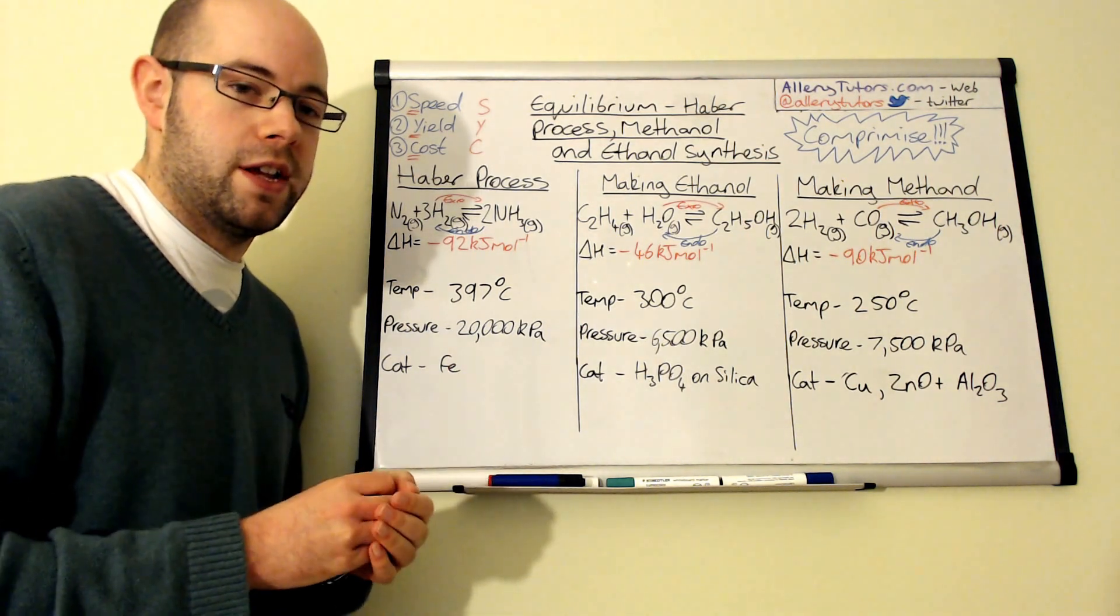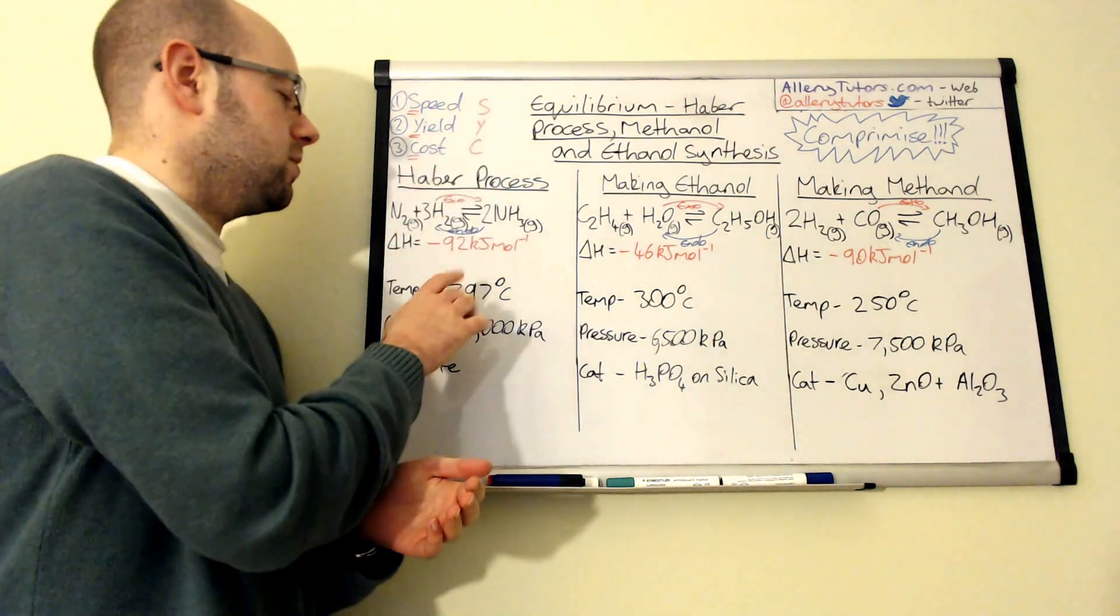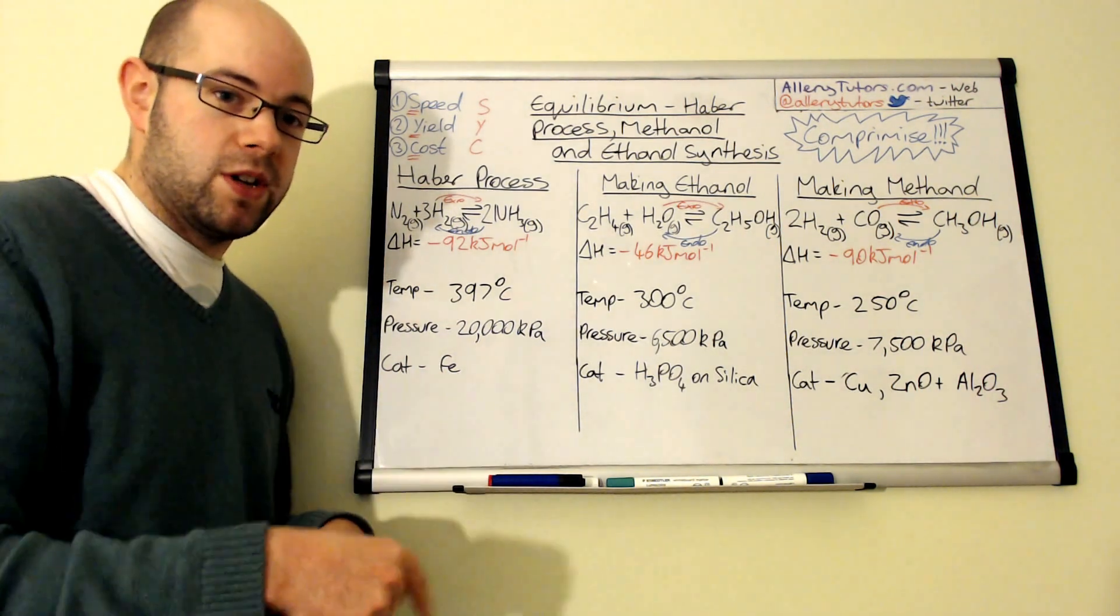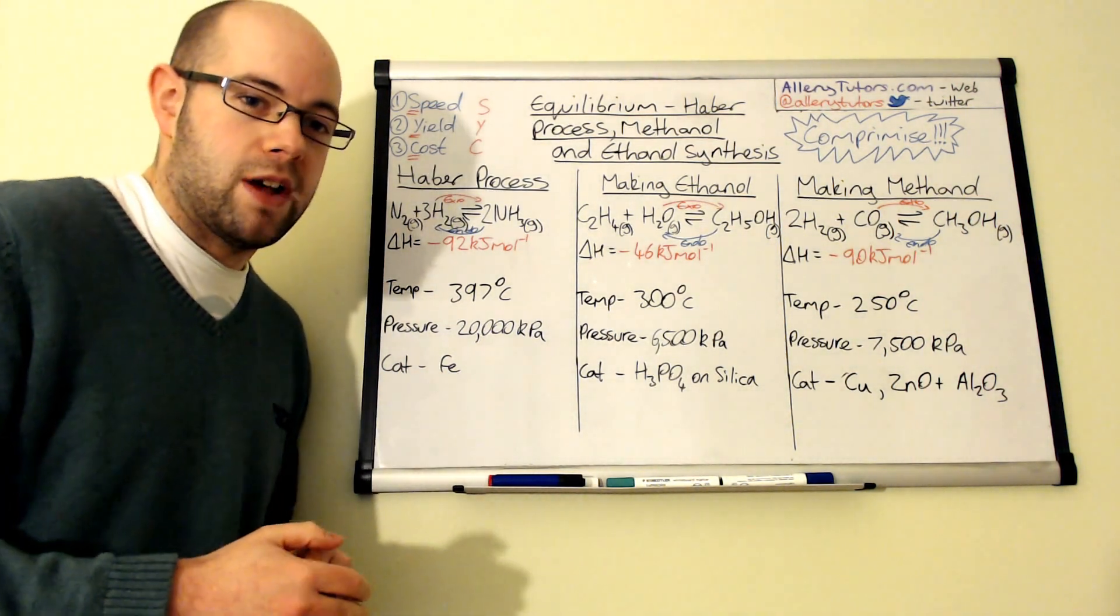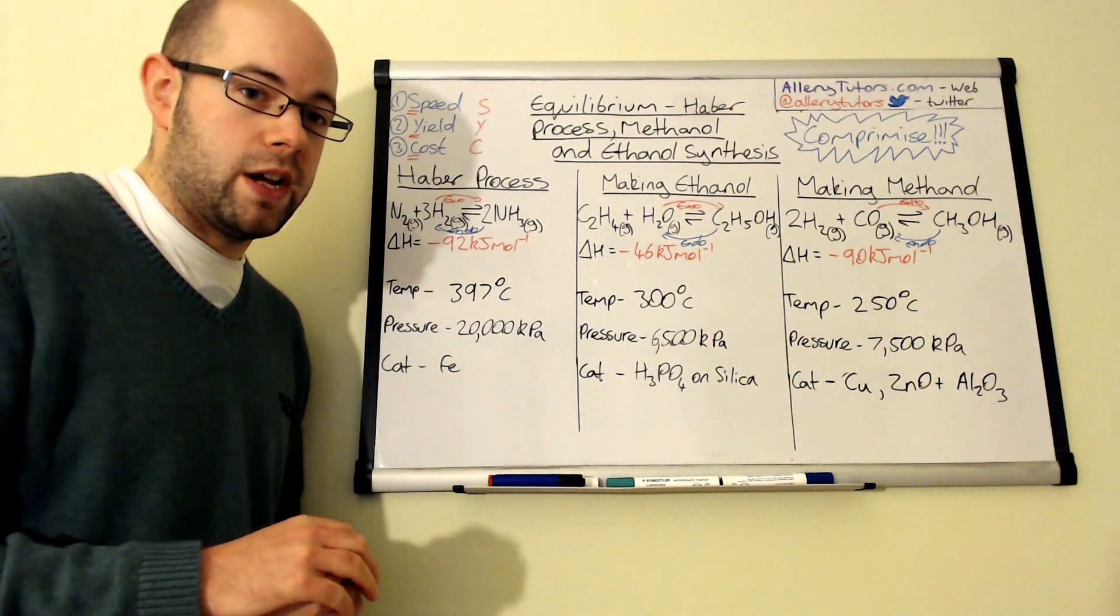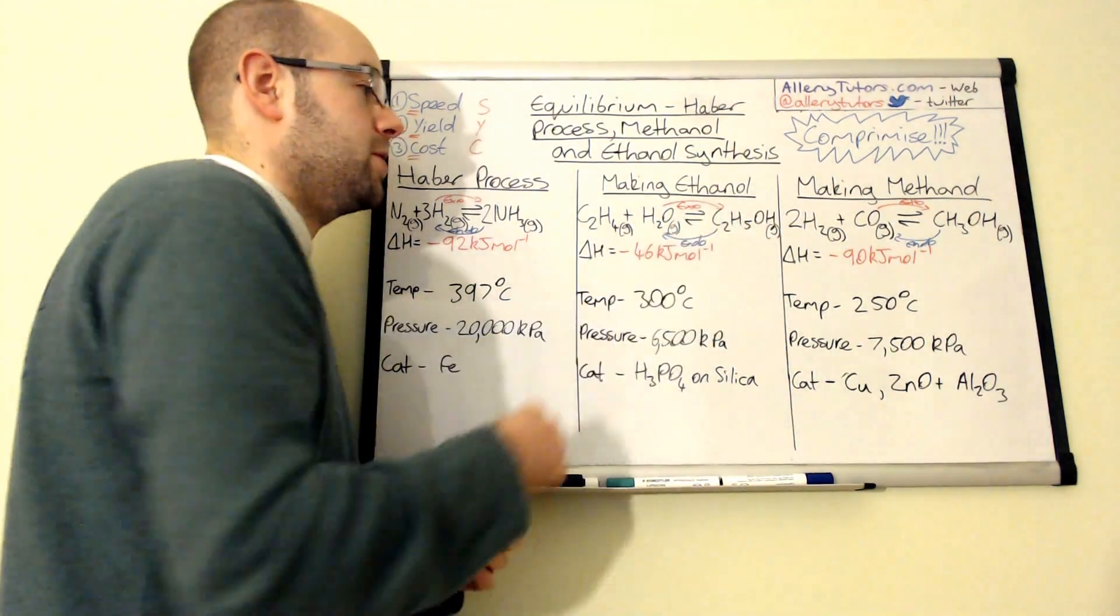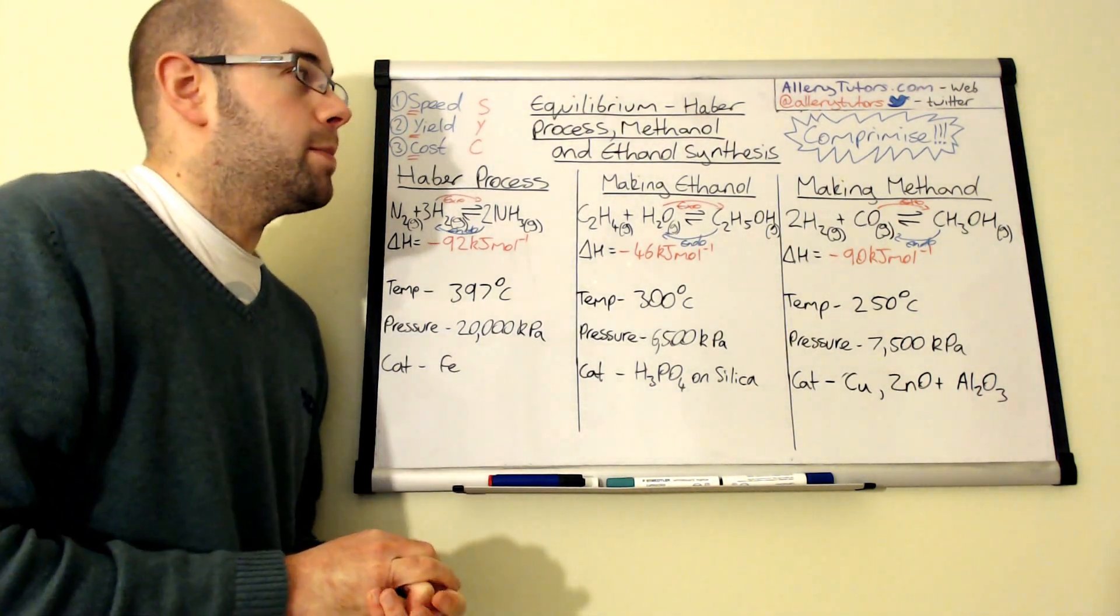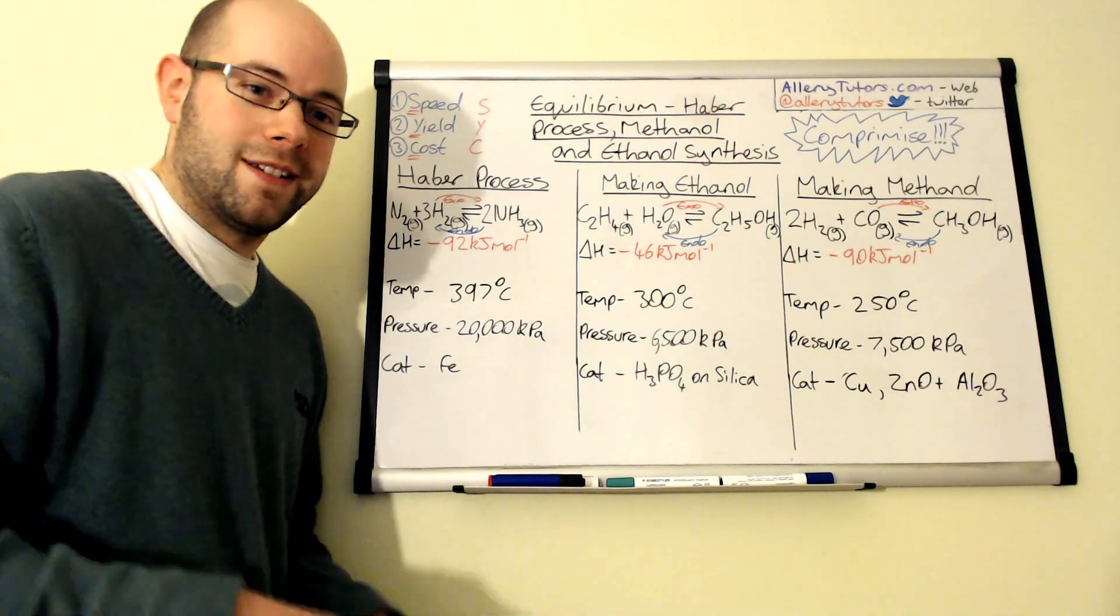Because we have that ability to do that, that actually increases the yield. So in this case the yields first time around may not look so good, but if you keep recycling any unreacted reactants, then you produce a decent yield. All these reactions are really useful basic chemicals. Hope that helps, that's it, bye.